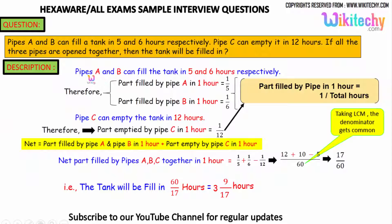As you know, pipe A and pipe B can fill the tank in 5 and 6 hours. Parts filled by pipe A in 1 hour is equal to 1/5, and the part filled by pipe B in 1 hour is 1/6.